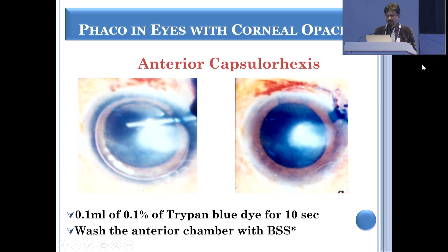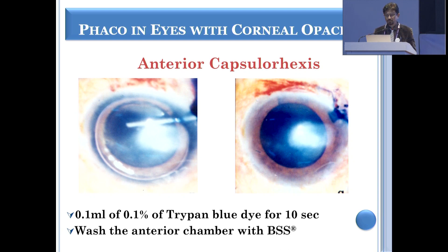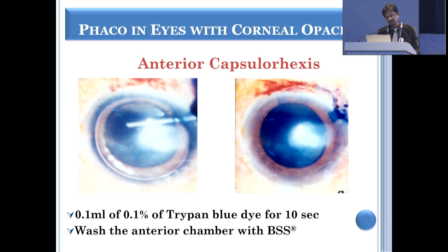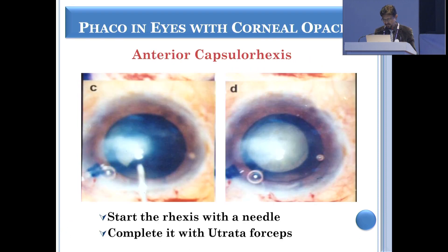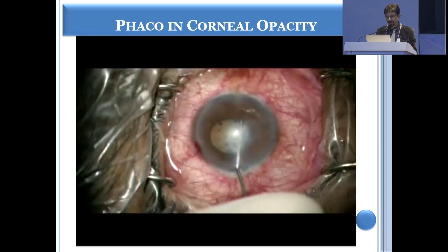Trypan blue, since the time it came, has been very useful in white cataracts, and when there's an opacity, it's preferable to use trypan blue for a slightly longer period so as to stain the capsule dark, so that you can do a capsulorrhexis. Later on, while doing chopping of the nucleus, you can see the capsular margin and you don't accidentally chop the margin of the capsulorrhexis. That's the reason why one should use trypan blue for a longer period.